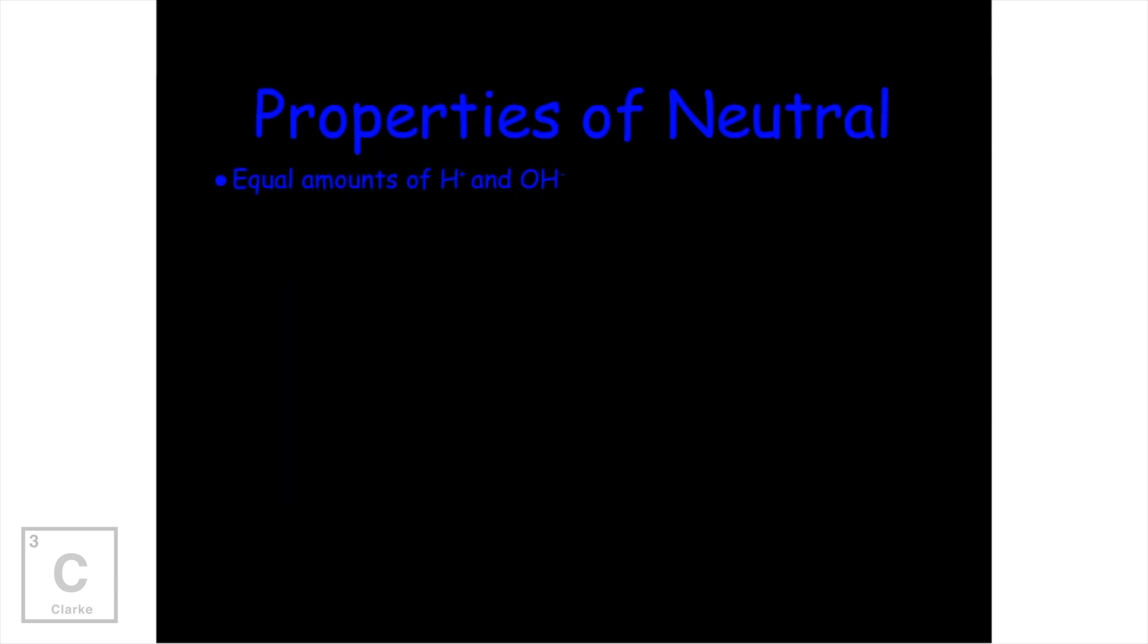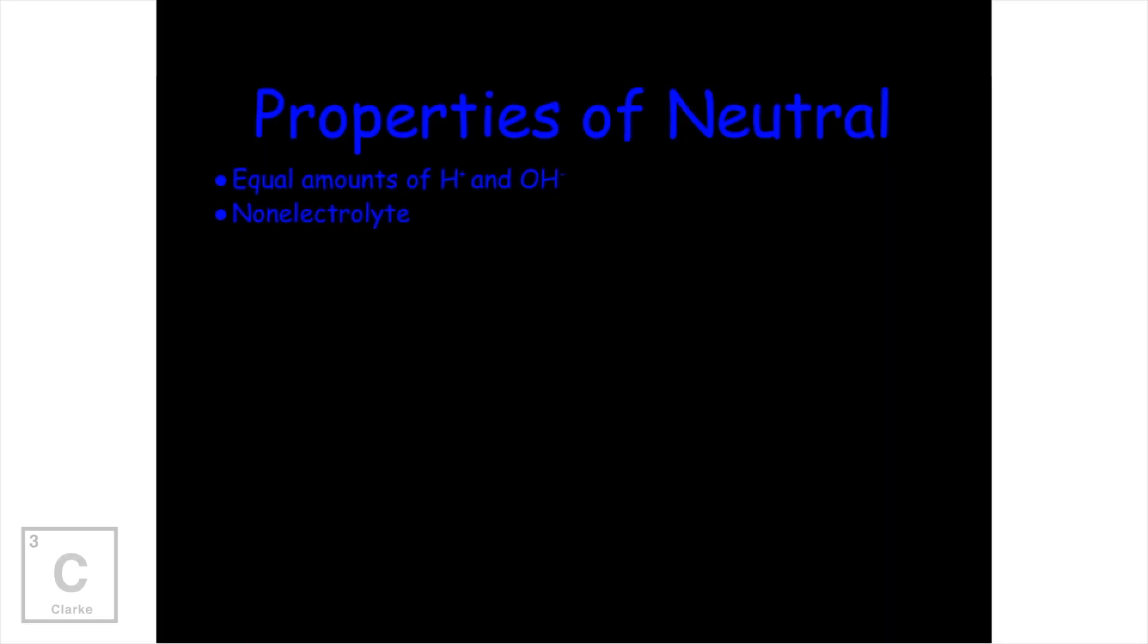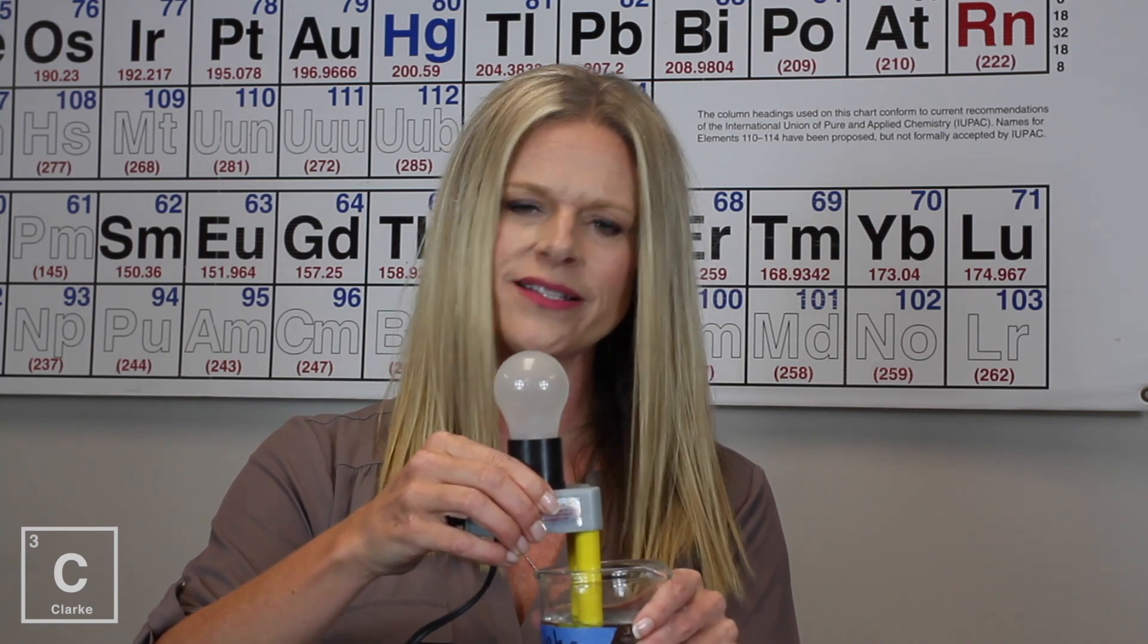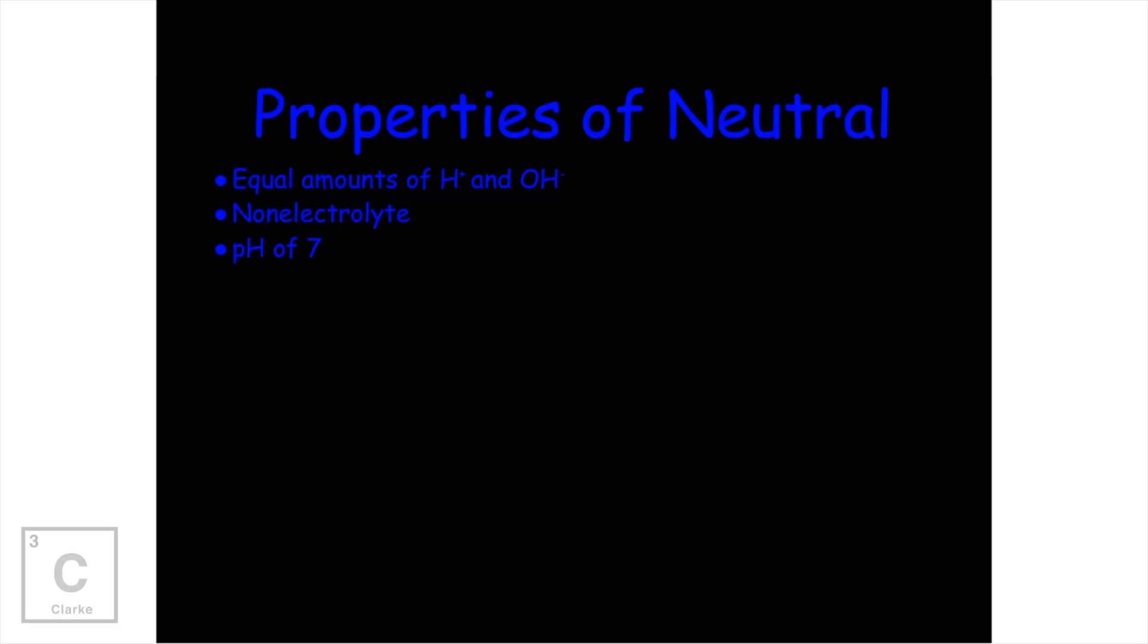We talked about the properties of acids, property of bases. Let's talk about what the properties of neutral is. The most important property of neutral is that the hydrogen ions and the hydroxide ions, they're going to be equal. Water is the most common neutral solution. Neutral solutions are neutral because they have an equal concentration of hydrogen ion to their hydroxide ion. They basically cancel out. And if they cancel out, non-electrolyte. Neutral solutions, non-electrolyte. Let's check that out. When we dip this in water, the light bulb doesn't light up because there's equal amounts of hydrogen ions to hydroxide ions.